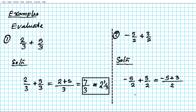Negative five plus three: since the signs are different, you subtract and keep the sign of the bigger number, which is five. The bigger is five and the sign of five is negative, so we have negative two over two. You can divide top and bottom by two and you end up with negative one as your final answer.